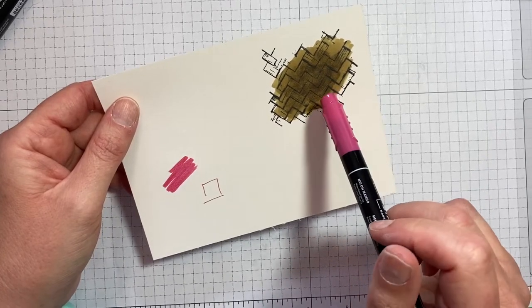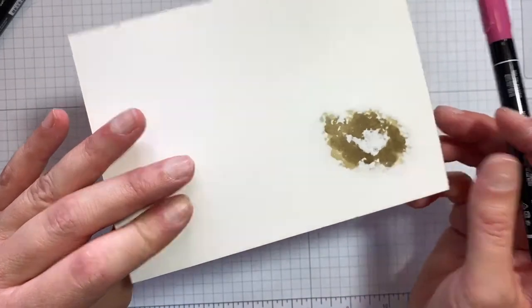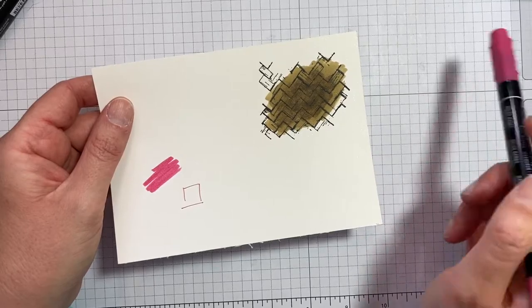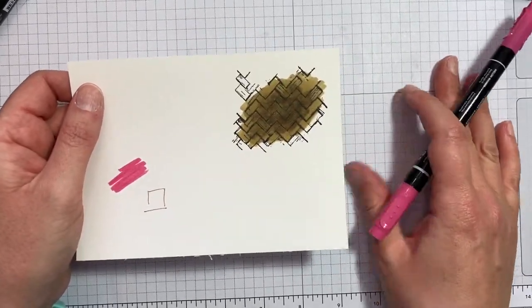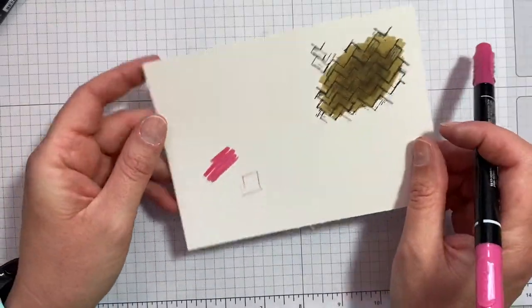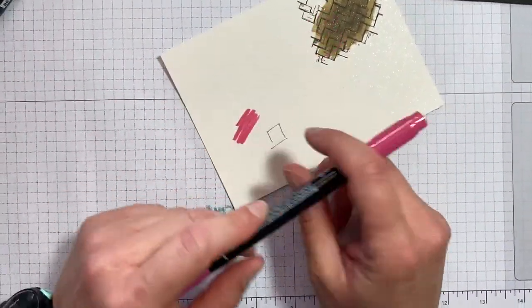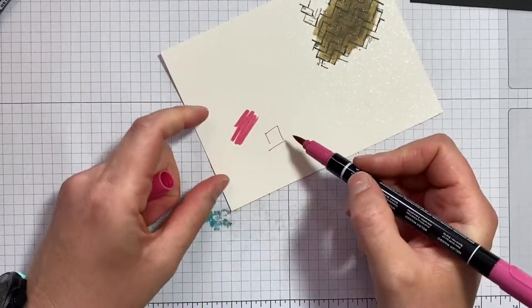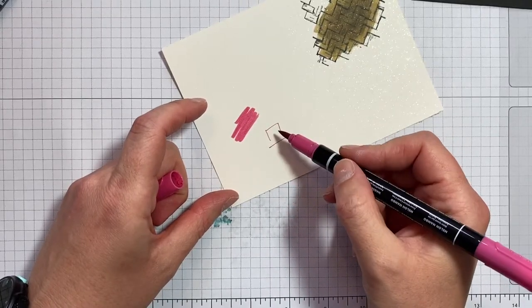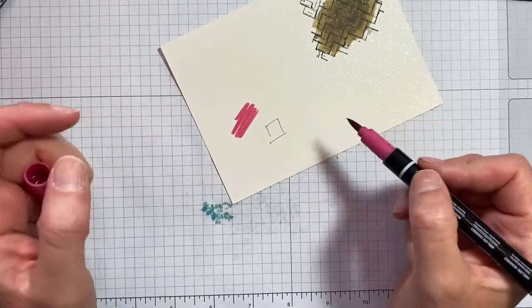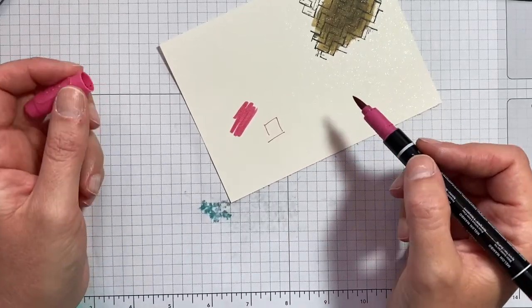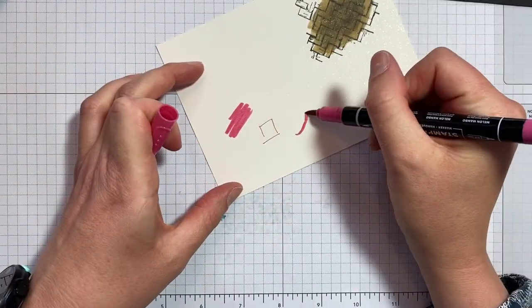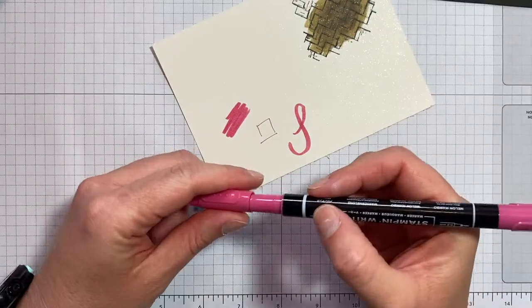So make sure you don't do this on top of a different project or a good piece of cardstock. Make sure you're doing it onto your grid paper or a bit of scrap. Right, so you can do different things with the Stampin' Write markers. Obviously you can write your message inside your card in a coordinating pen, which always looks really nice. If you want to personalize, you can obviously write on the front of your card. If you're good at brush lettering, you know, you can create some lovely effects with that.